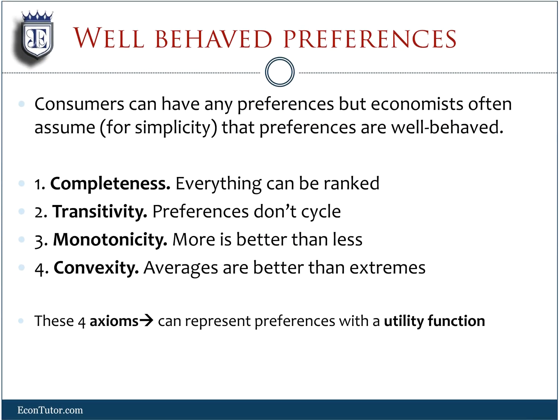The primary axioms are completeness, which means that everything can be ranked. Transitivity means that preferences are consistent. Monotonicity is that more is always preferred to less. And convexity is that averages are better than extremes. When you combine these axioms, it gives us a framework to sketch out our indifference curves, which is the foundation of consumer preferences.